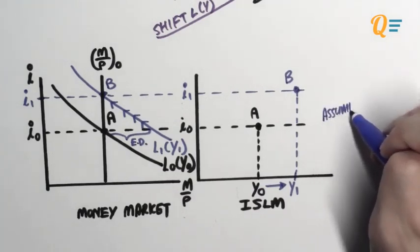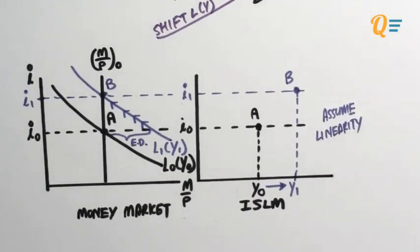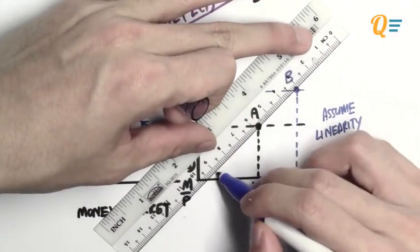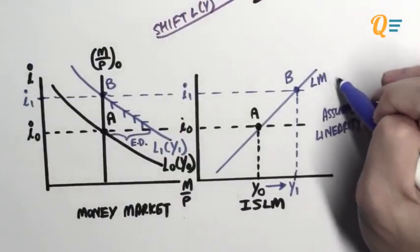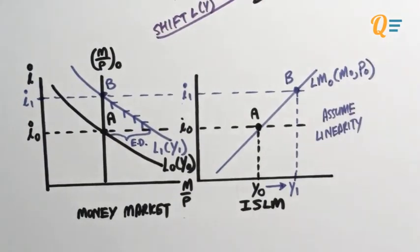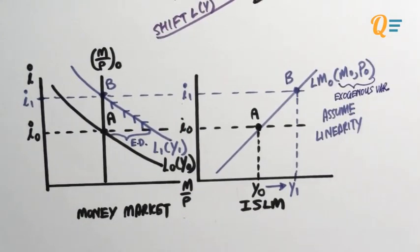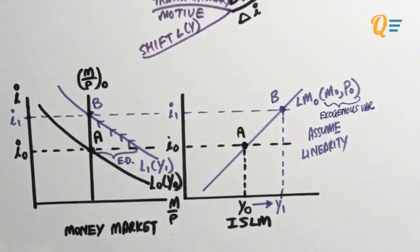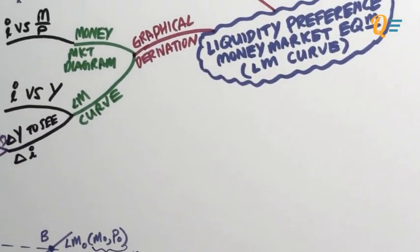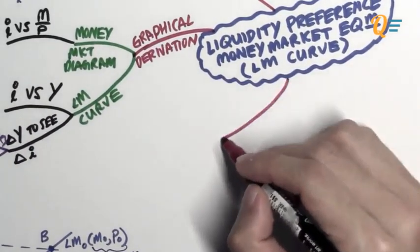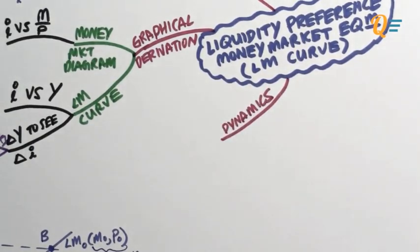Moving to the next step: assuming linearity, the LM curve is a straight line. You connect points A and B, and there you have your LM curve. Note that the variables inside the brackets are all the exogenous variables that affect the LM curve — in this case, the nominal money supply as well as the general price level. Just like the IS curve, let's take a look at the dynamics of the LM curve.